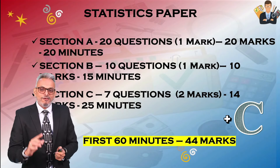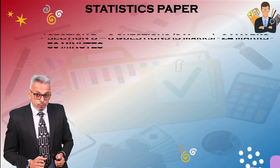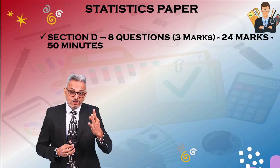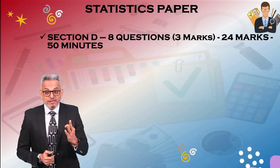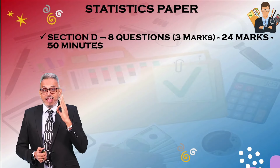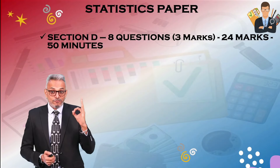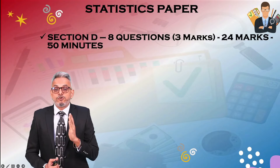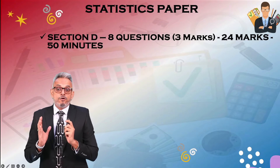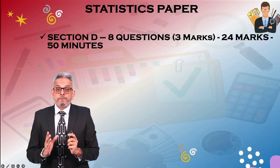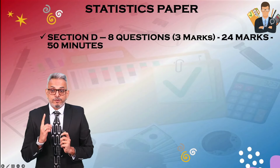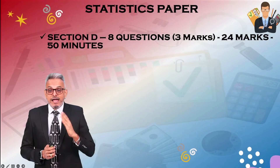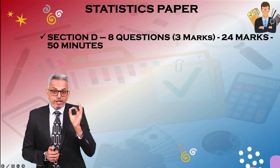Now we come to Section D, which has three-mark questions. Out of 12 questions you have to attempt eight questions, giving you a good number of options. You can score 24 marks in Section D, and I am allocating 50 minutes for this — Section D should be finished within 50 minutes.